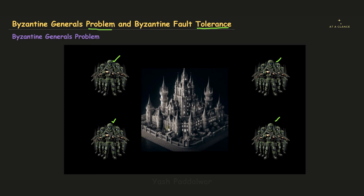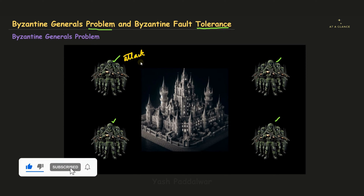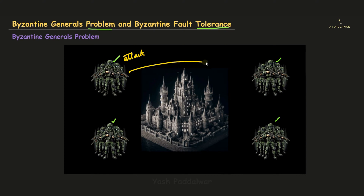They all needed to have the same decision to capture the empire. The general of one division was the one to initiate what step should be taken — either attack or surrender. Let's say this division's general says we need to attack, based on the current situation of the empire. This general will pass the message to other divisions that we need to attack. If all of them get the message correctly without any modification, everyone will be ready to attack.